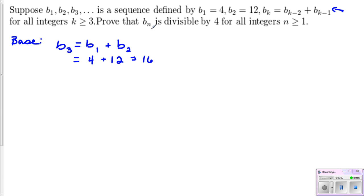Now, the other side of this is saying, well, we have to prove that B_n is divisible by 4. So can we also say that 4 divides B₃? Well, if B₃ is 16, does 4 go into 16? And this is true because 4 times an integer 4 gives us 16. So we've shown that our base case works out.